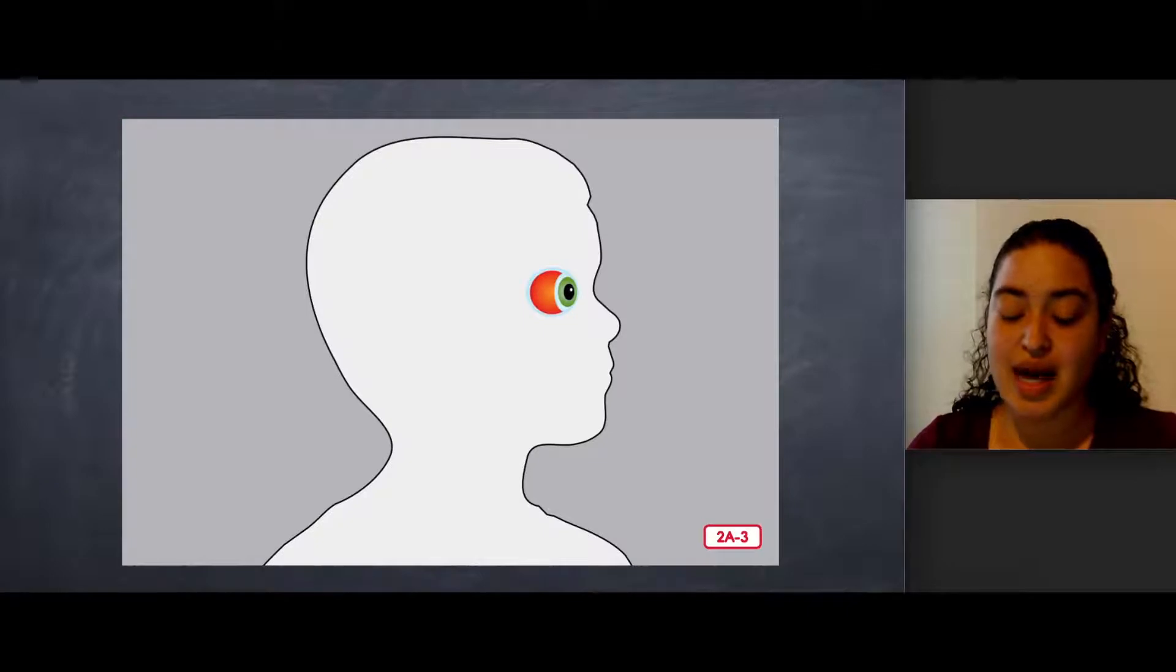You might not be able to tell when you look in a mirror, but in fact, your eyes are round like balls. That is why they are called eyeballs. Each of your eyeballs is about as big and almost as round as a normal sized gumball or marble, about an inch across. But your eyeballs aren't hard like gumballs. They're actually squishy like gummy bears.